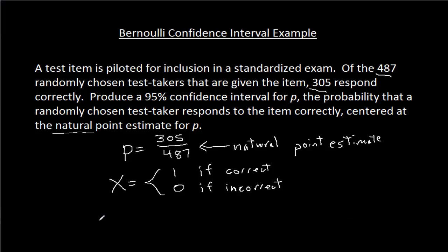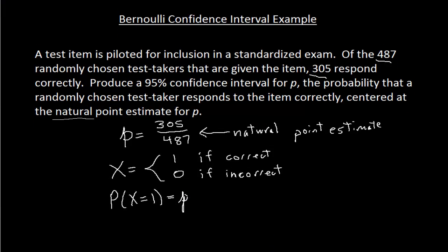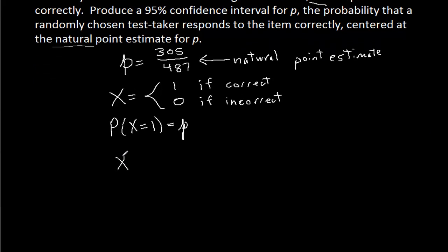And then this little p here is the probability that x equals 1. And you may recall the x bar for a Bernoulli random variable is just little p, 305 over 487. Because you take the values times the probabilities, the 0 isn't going to contribute anything. You'll just have 1 times the probability that x equals 1. So this is the expectation.